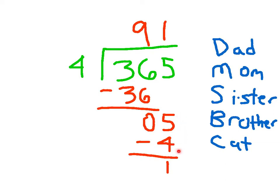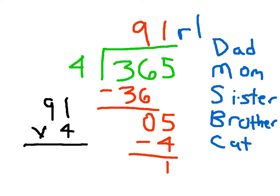Mom says 1 times 4 is 4. And 5 minus 4 is 1. At that point we still have to write our remainder. That can be part of the cat's job too. The cat will take our answer, 91, and use the inverse operation of division — multiplication — multiply by the divisor, then add back in the remainder to see whether we get the same number as our dividend. And it does check.